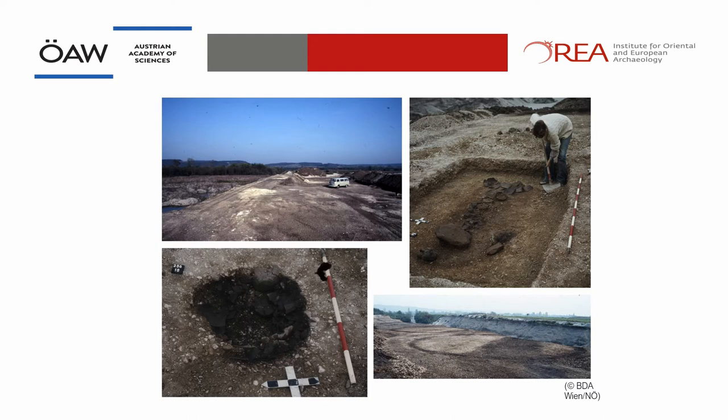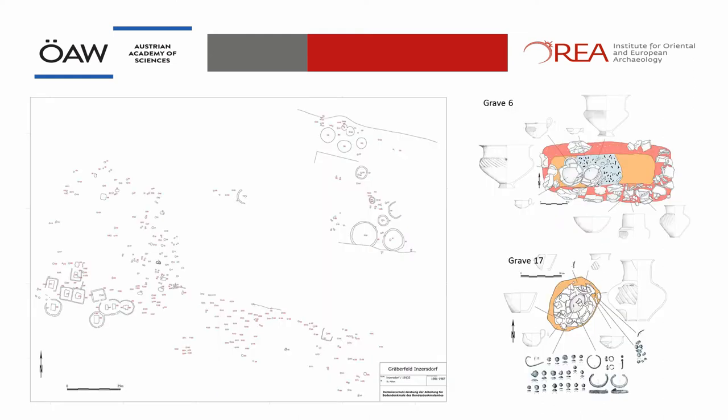The cemetery contained 273 graves, which is the largest early Urnfield cemetery in Eastern Austria, including 21 graves with more than one individual. The graves are either long rectangular — considered to be the oldest graves — or round to irregular, which are considered the younger graves. Most of the graves contained urn burials, but some scattered cremation graves were also recorded.